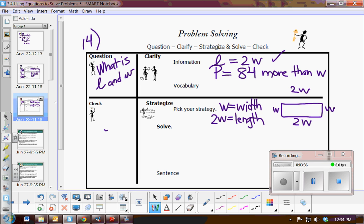I've used this fact. Now let's use the last fact, the perimeter. Perimeter is the sum of all sides, so I have the two widths plus the two lengths. I'm told that it is 84 more than the width.